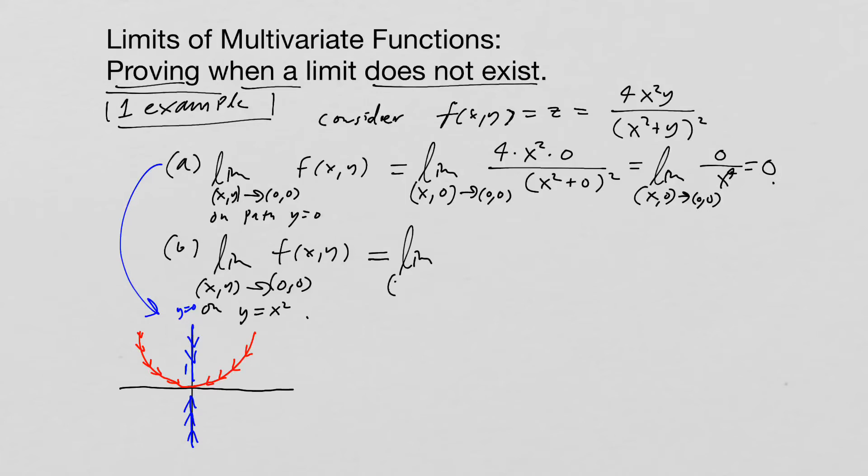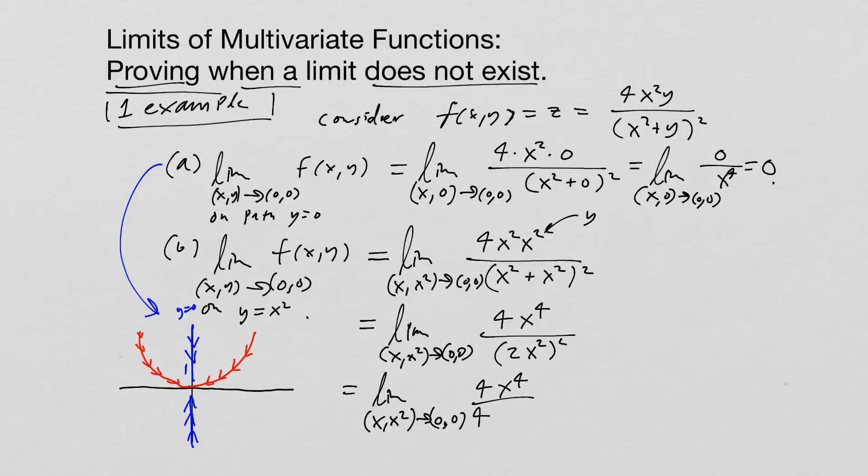So that means we're going to go to limit as (x, x squared) goes to (0,0) of four times x squared times x squared, because that's what's equal to y now, all over (x squared plus x squared) quantity squared. So now we just have to do a little bit of simplification. We have four x to the fourth power over (two x squared) quantity squared. We can write this again. I know it's sometimes a little bit tedious to keep writing the limit symbol, but always remember to do that. And that limit is going to be one.